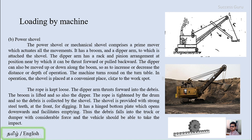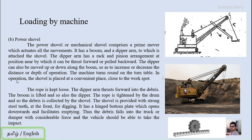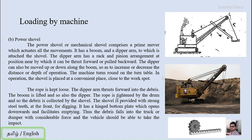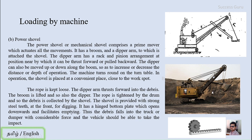The dipper arm can also be moved up or down along the boom so as to increase or decrease the distance or depth of operation. According to where you want to work, this can be moved front and back, up and down — all such movements are possible with this device. The machine turns around on a turntable. In operation, the shovel is placed at a convenient place close to the workspace. The rope is kept loose, the dipper arm is thrust forward into the debris, and the boom is lifted along with the dipper.